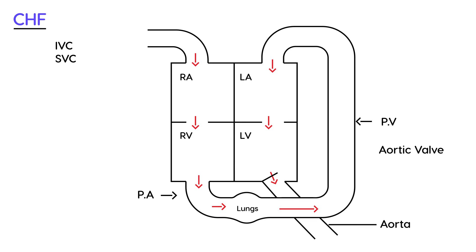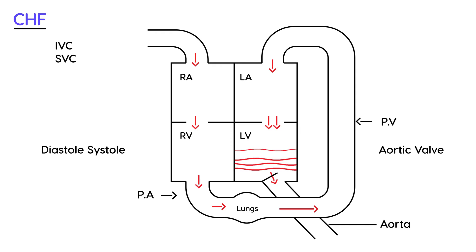There are two very important components of this cycle. The first is called diastole and the second is called systole. Diastole refers to the period where the heart is being filled with blood — in particular, when the left ventricle is being filled with blood, as blood accumulates in that chamber.